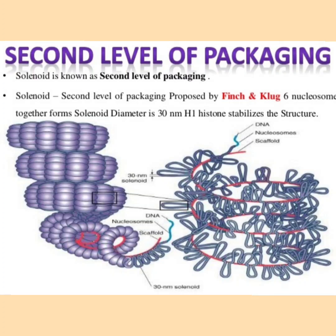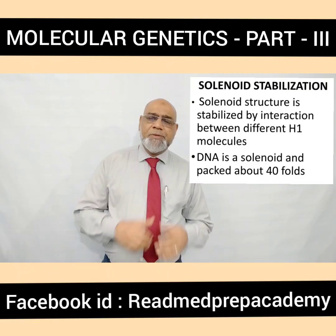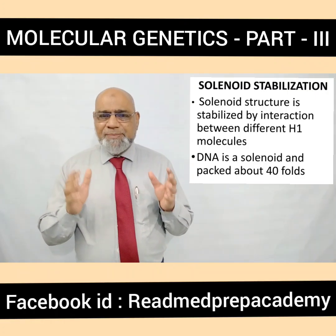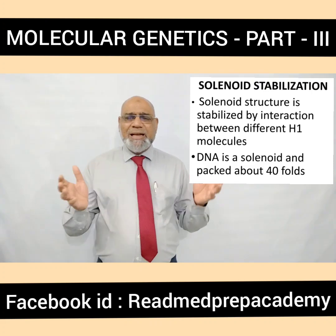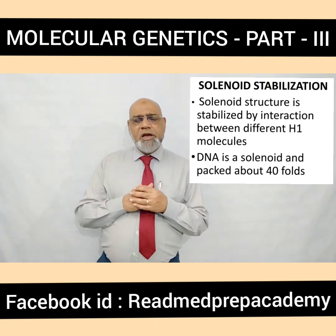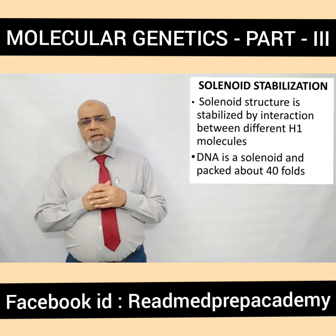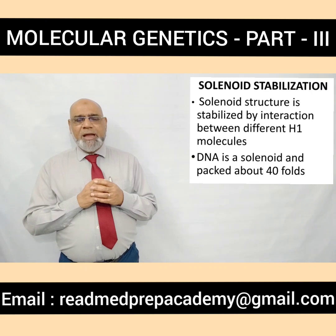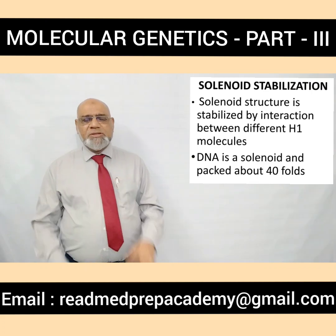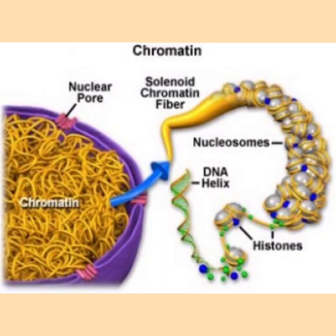DNA in a solenoid is packed about 40-fold. The chromatin fiber in interface nuclei and mitotic chromosomes has a diameter varying between 200 to 300 nanometers and represents the inactive chromatin. The 30 nanometer fiber arises from the folding of a nucleosome chain forming a solenoid structure having 6 nucleosomes per turn, and this packaging is called the second level of packaging.